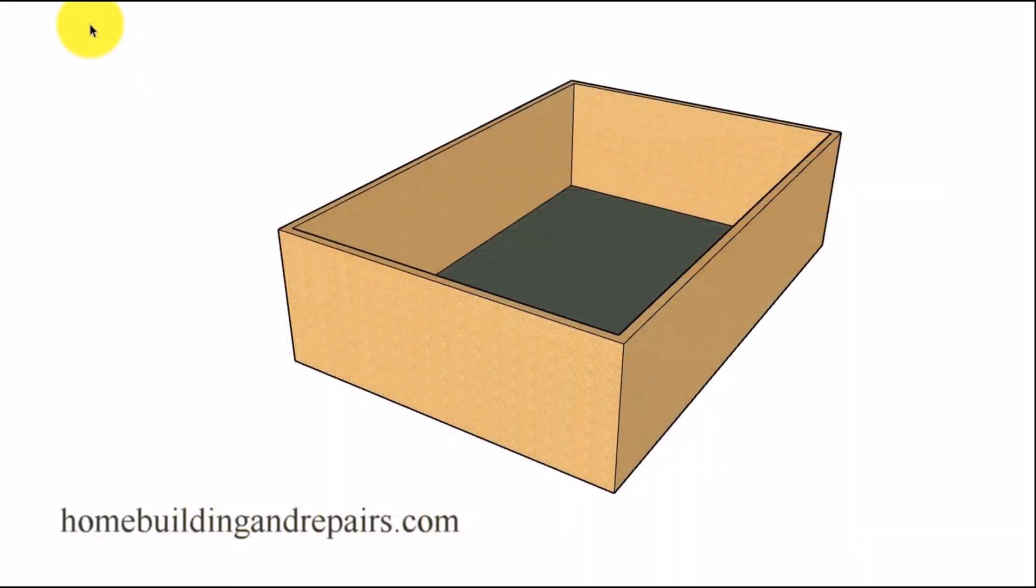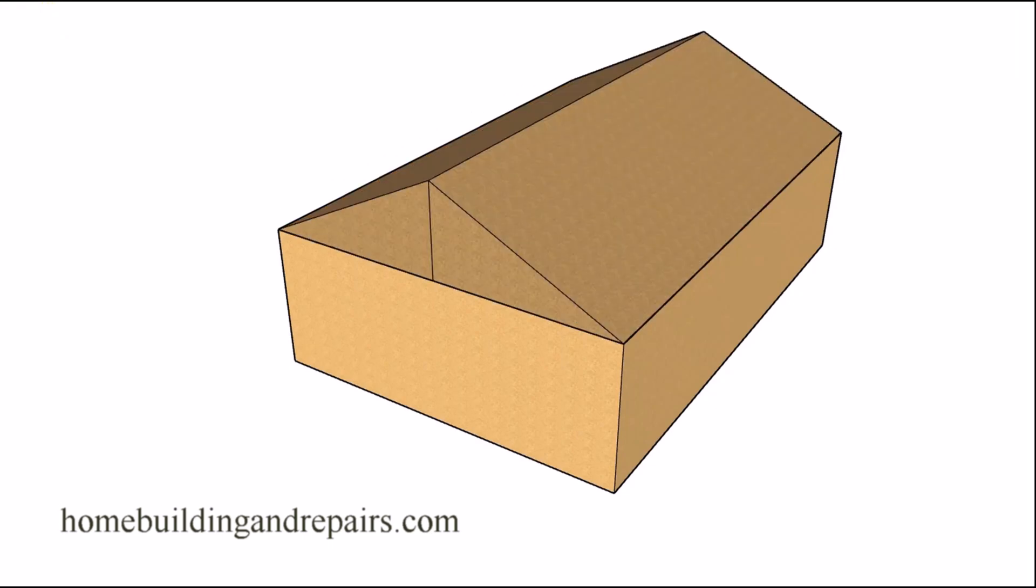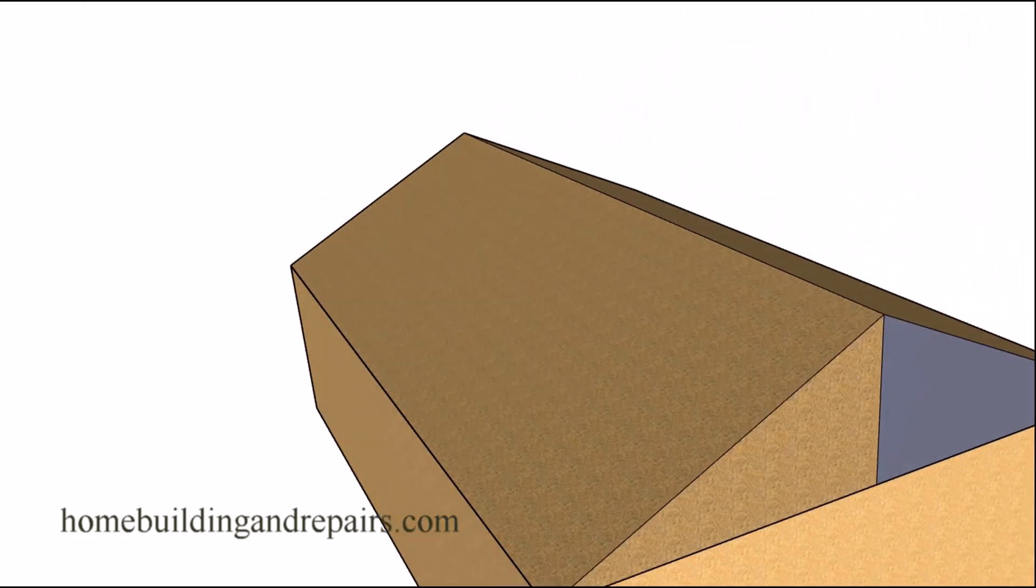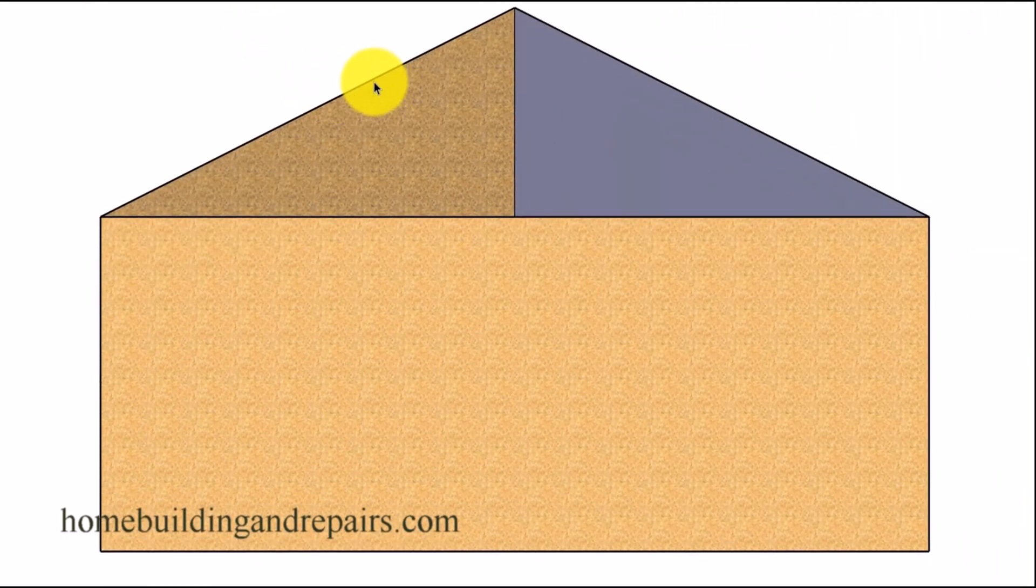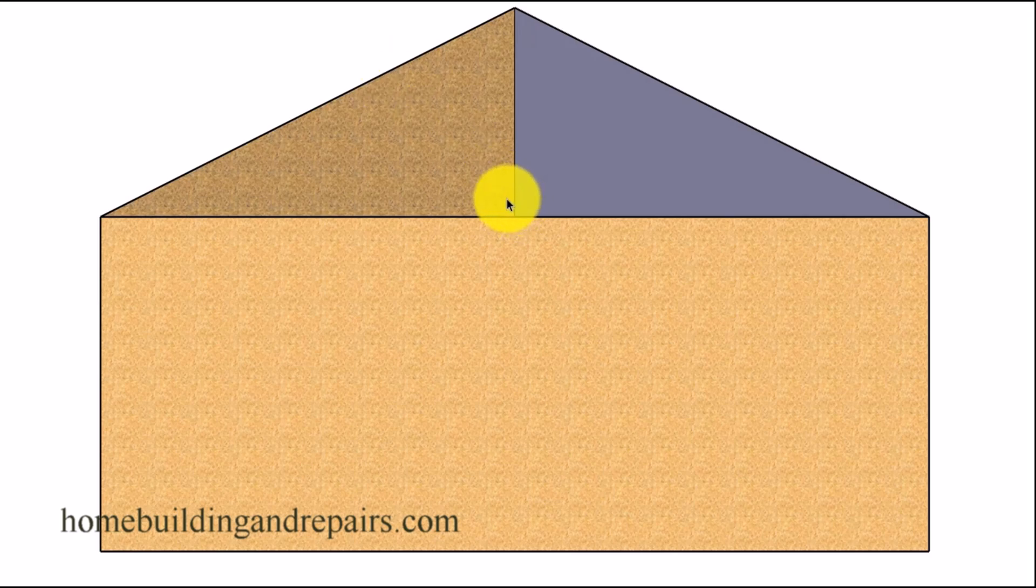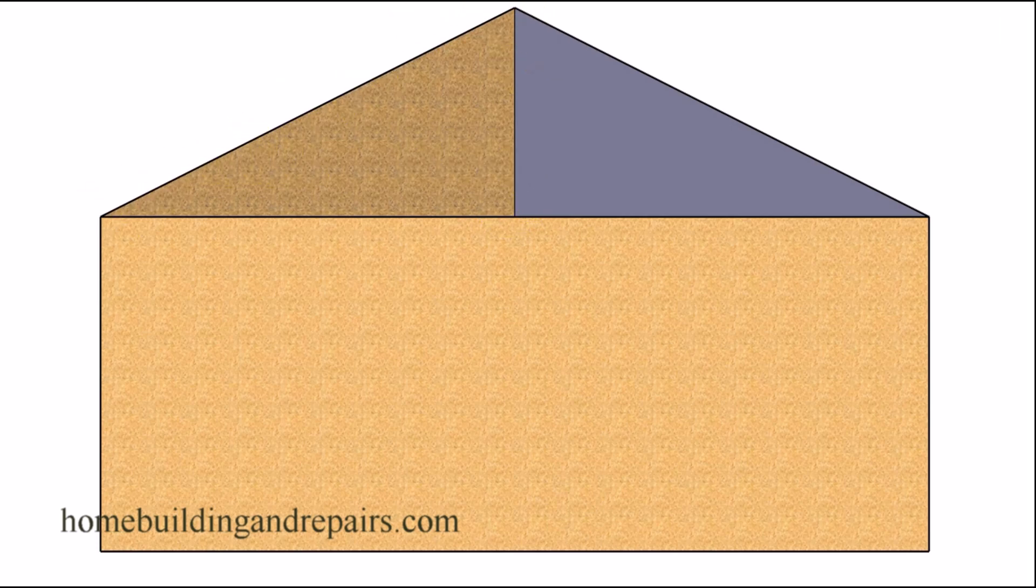In this video, I will provide you with the most common math formula that I used in the construction industry. And it's used to figure out the length of the longer side of a right triangle, or a triangle with a 90 degree angle in it. And it's a common math formula used for figuring out the length of a roof rafter.